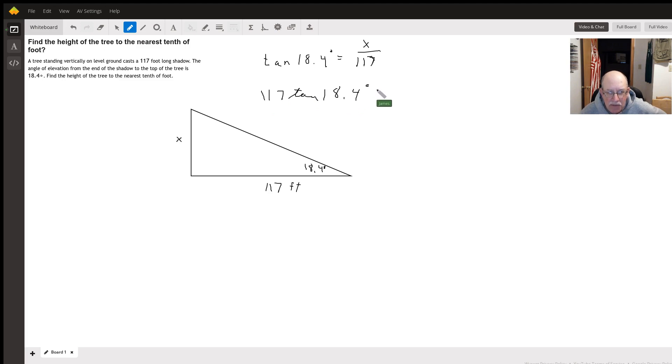We end up with x equaling 117 times tangent of 18.4. Make sure I'm in the right mode here. 117 times tangent 18.4.